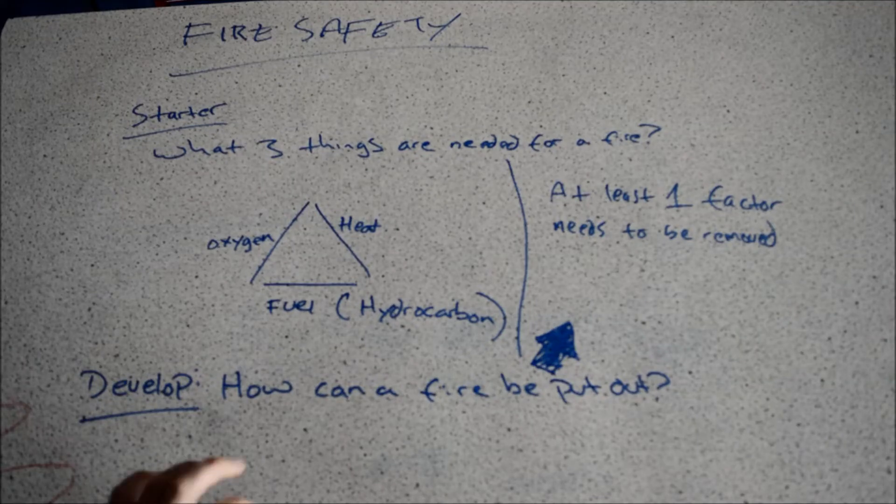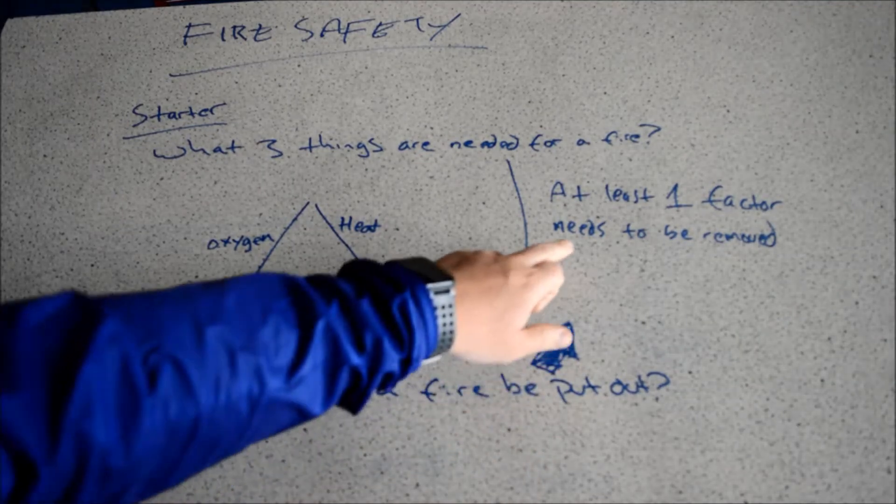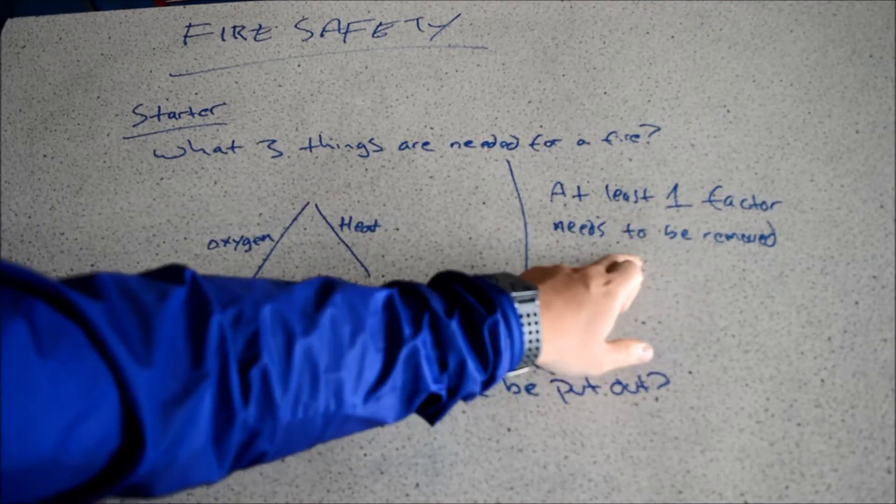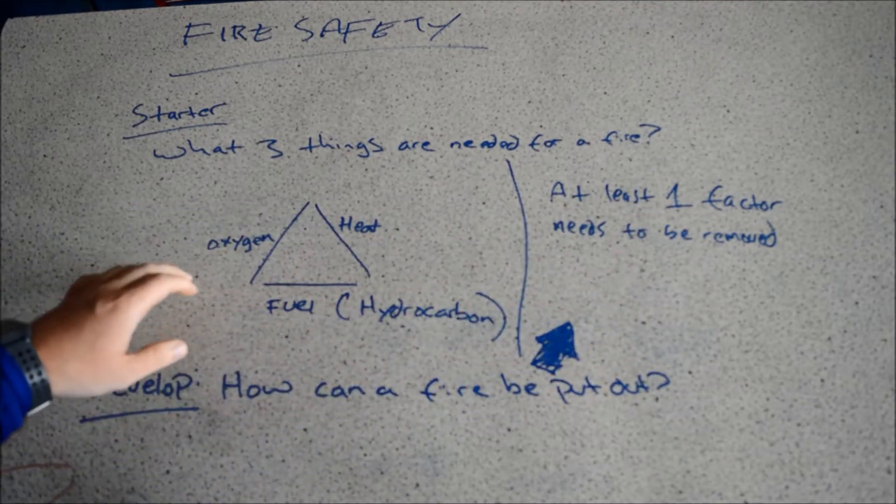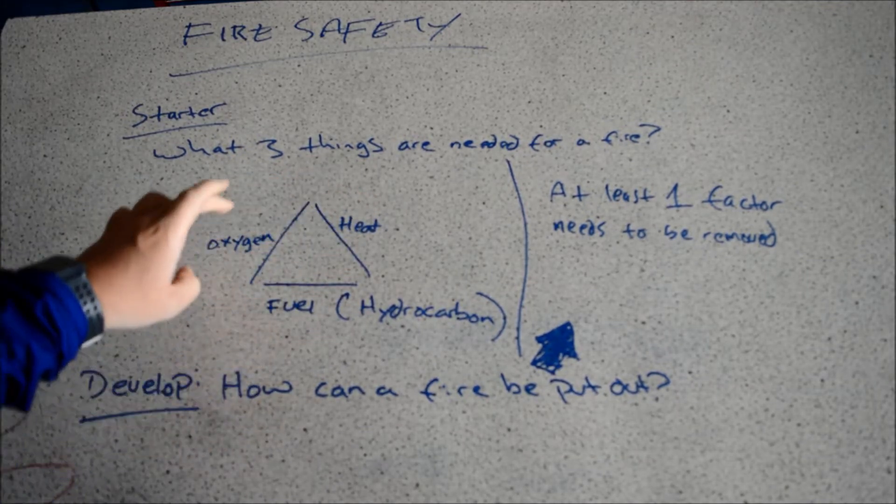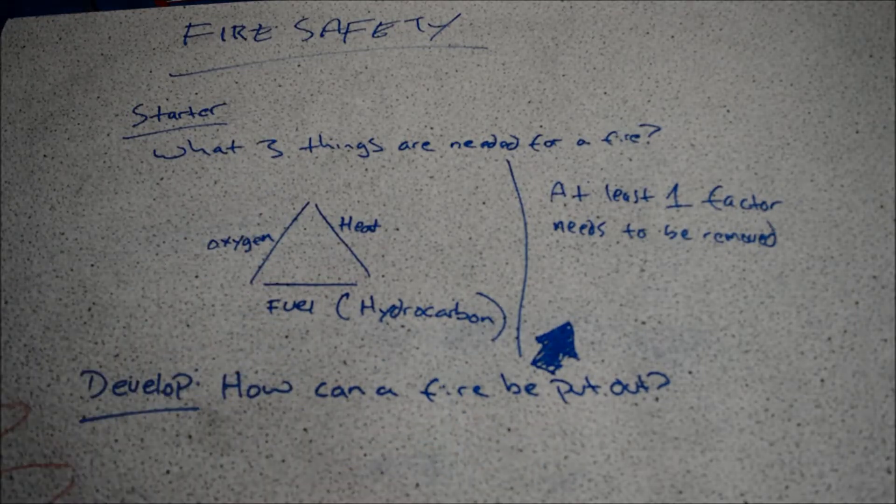Right, okay, so to answer our how can a fire be put out question, we can see arrow pointing to our answer here. So at least one factor needs to be removed. And the factors that we are referring to, of course, are the oxygen, the heat, or the fuel. If you remove any one of these, then we are able to put a fire out.